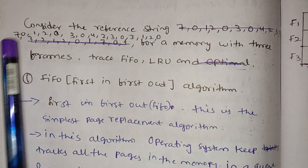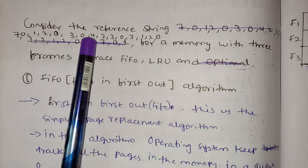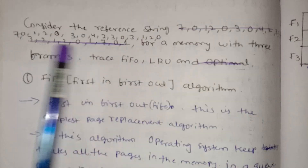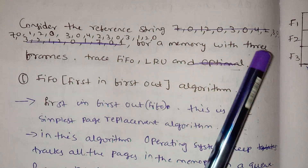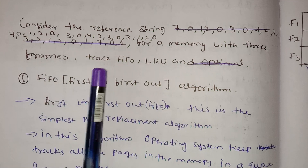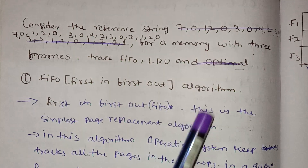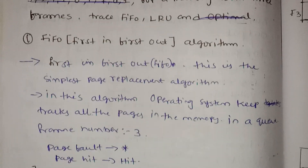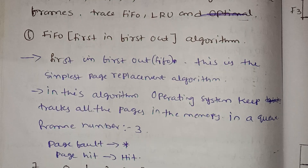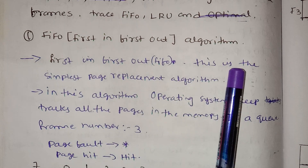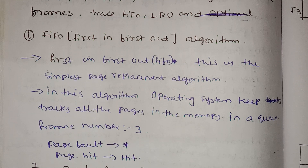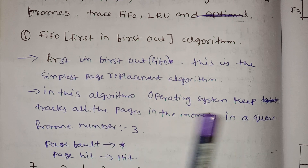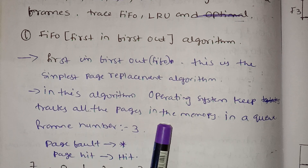The reference string is 7 0 1 2 0 3 0 4 3 0 3 1 2 0. FIFO stands for First In First Out. This is the simplest page replacement algorithm.